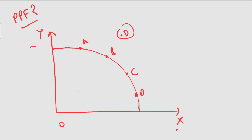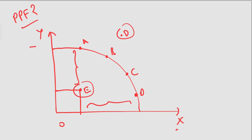Suppose there is a point E inside the curve. This point is feasible and attainable — a country can produce here easily — but there is a problem of inefficiency. If a country produces at this point, it could instead produce at point M or N, the maximum of goods X and Y, but only producing at point E means inefficient utilization of resources.